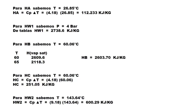That is, 4.18 × 26.85 = 112.233 kJ/kg. This is the enthalpy of stream A.